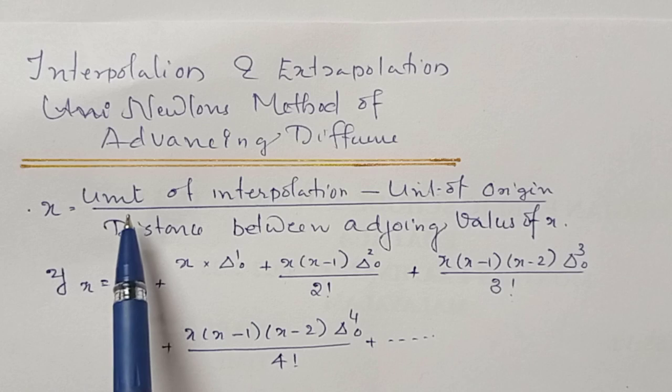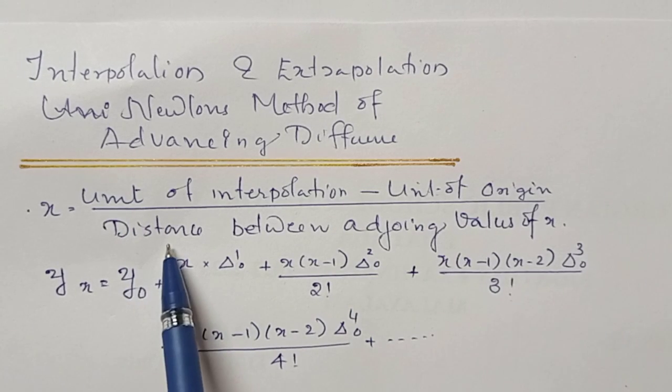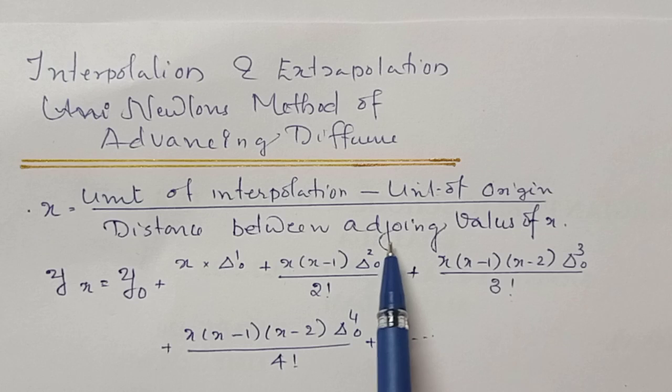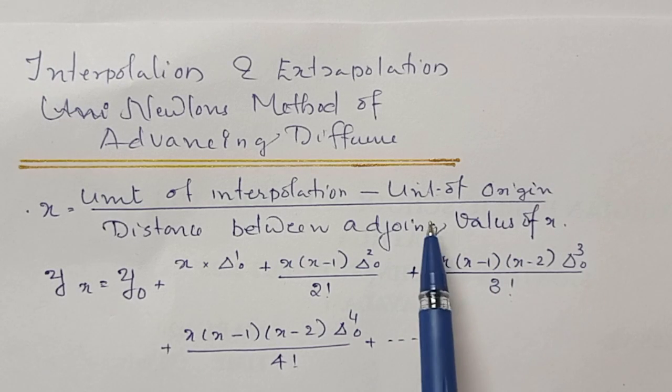x equals unit of interpolation minus unit of origin, divided by distance between the adjoining value. This is the equation of the formula.